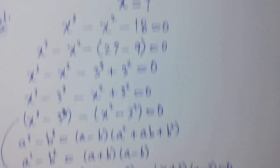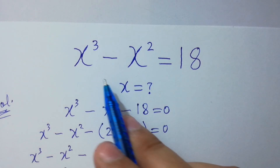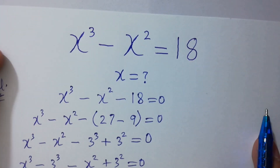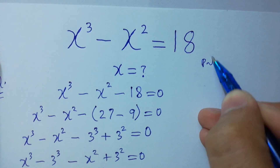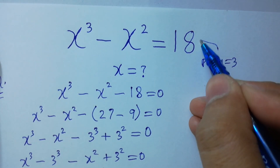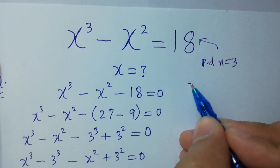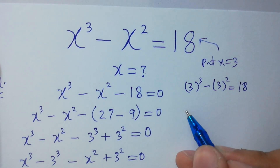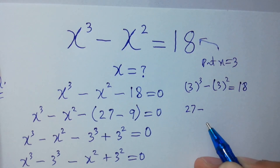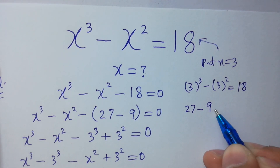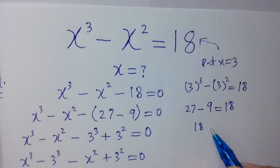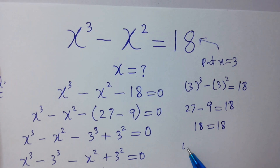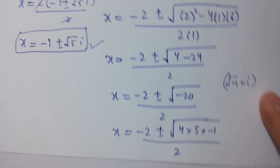Now check it out. We have x cubed minus x squared equals 18. Put x equals 3, our real solution, into this equation. Here we have 3 cubed minus 3 squared equals 18. 3 cubed is 27, minus 3 squared which is 9, equals 18. 27 minus 9 equals 18. 18 equals 18. Left hand side equals right hand side, which shows that we have an accurate solution.